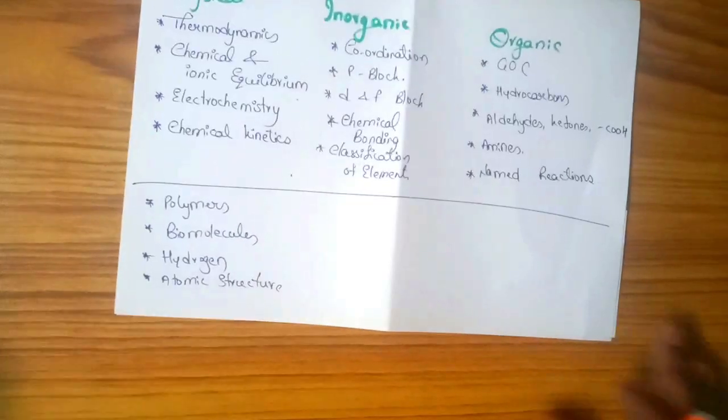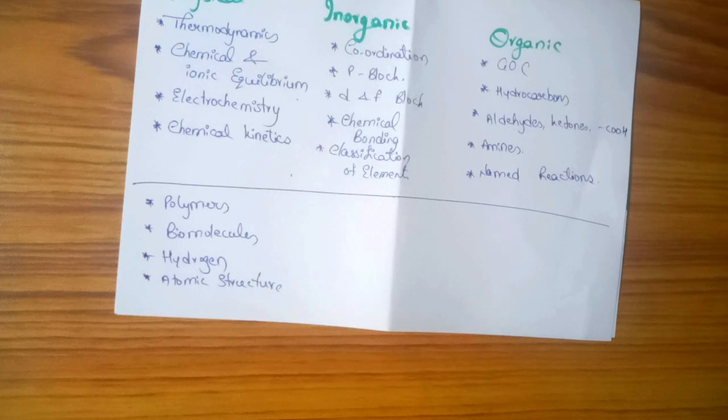I have four special chapters which are polymers, biomolecules, hydrogen, and atomic structure. Polymers and biomolecules are biology based. We have a lot of content in biology, but you can find it very easy because the MCQs are repeated. There are reducing salts and non-reducing salts examples, types of polymers, monomers, etc.